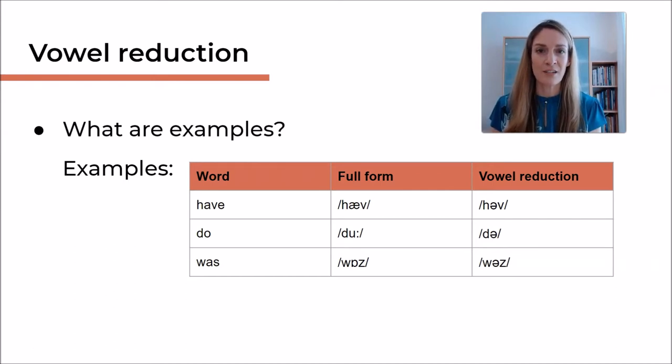And this is what we also call the weak form. Let's have a look at another example with the auxiliary verb do. Do. Long U also usually gets reduced to a schwa.